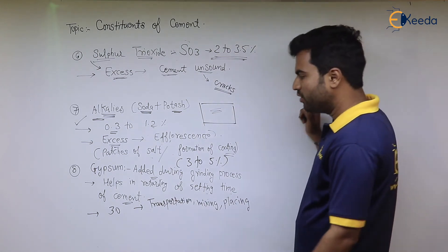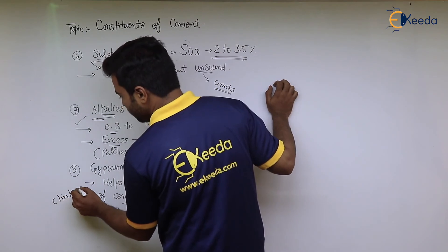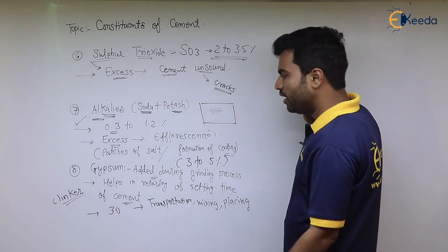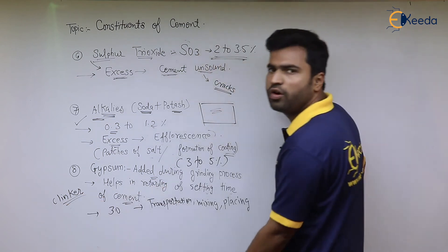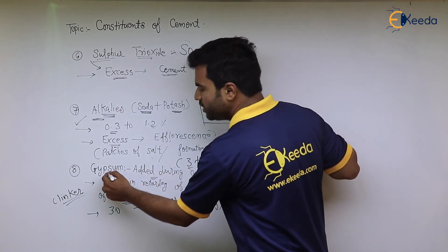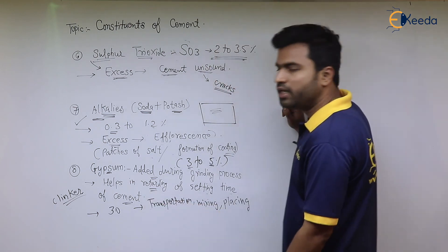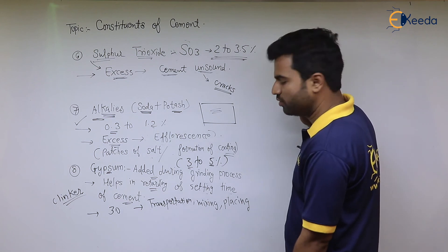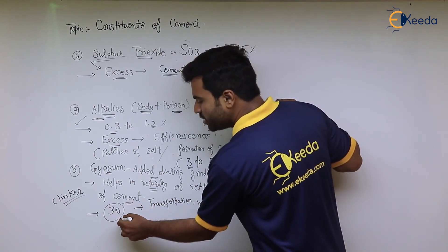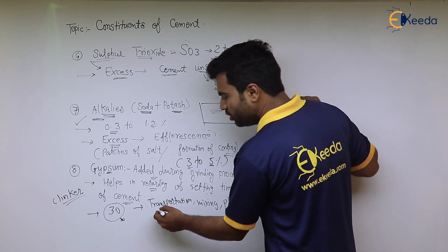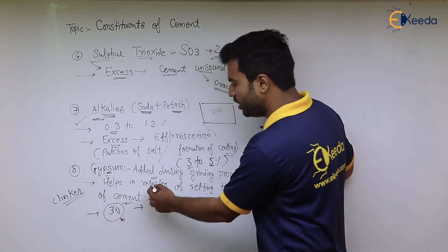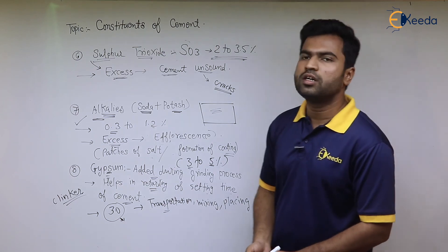The last constituent is gypsum. It is added at the time of the grinding process, after the formation of clinkers. The gypsum is added in the percentage of 3 to 5 percent. Its function is to retard the setting time of cement — to slow down the setting process. This is necessary because with an initial setting time of only 30 minutes, it is very difficult to transport, mix, and place cement in such a short time. Therefore gypsum is added to retard the setting time.